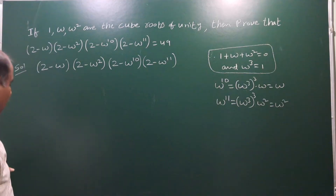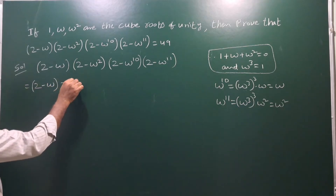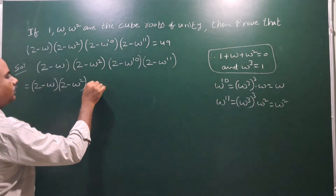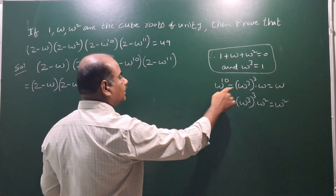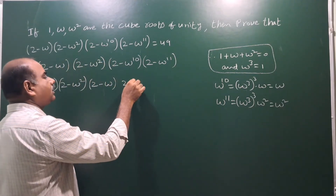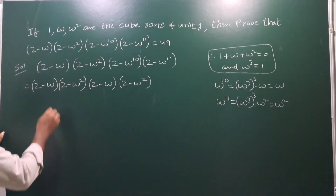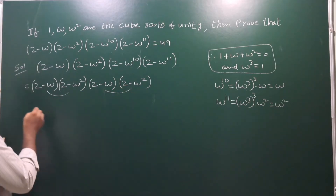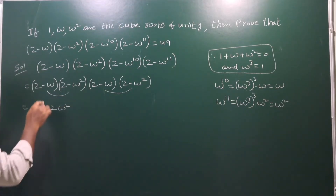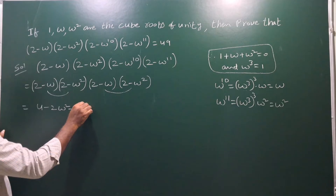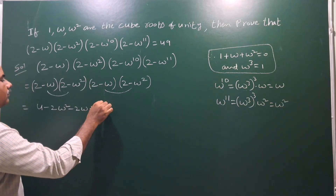So simplifying: (2 - ω¹⁰) becomes (2 - ω), and (2 - ω¹¹) becomes (2 - ω²). Now we multiply these two pairs. Expanding (2 - ω)(2 - ω²): 2·2 = 4, then 2·(-ω²) - 2ω + ω·ω² = ω³.